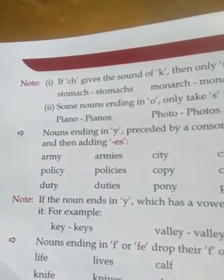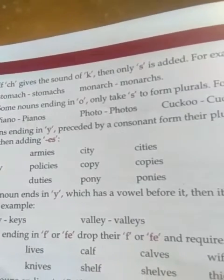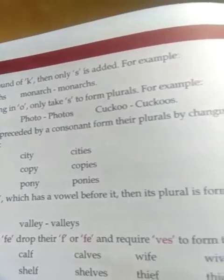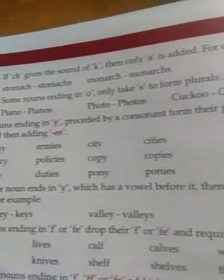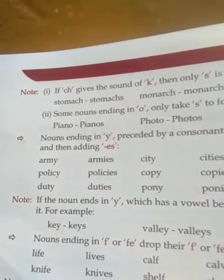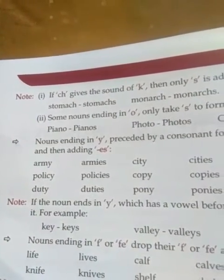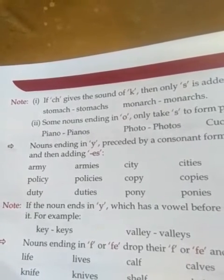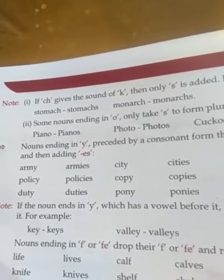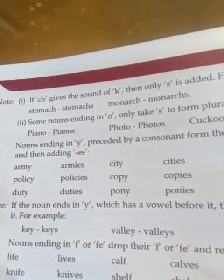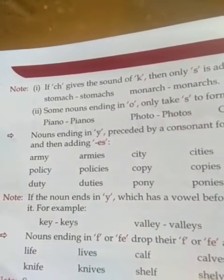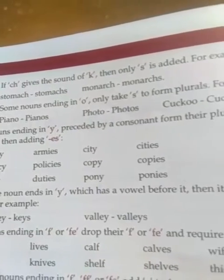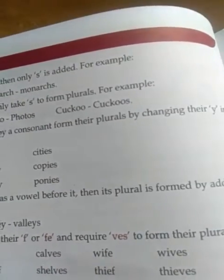Nouns ending in 'f' or 'fe' drop their 'f' or 'fe' and add 'ves' to form their plural. For example: life → lives (remove 'fe', add 'ves'), calf → calves, wife → wives, knife → knives, shelf → shelves, thief → thieves.